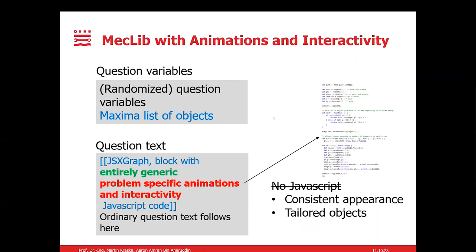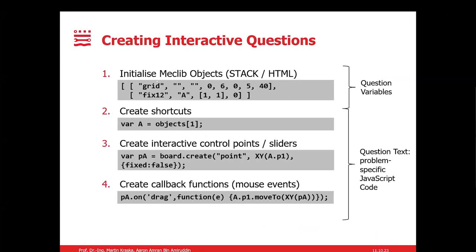Now, as stated earlier, to enable the question in Moodle to be interactive, the creator of the questions now needs to have some knowledge of JavaScript in order to combine the objects together and to ensure that the entire system moves uniformly. This is done in MecLib by, for example, if you want to create the interactive questions, we have to firstly initialize the objects, which in this case are the question variables. In Moodle we do it as a STACK variable, but then in JSFiddle we just put it in the HTML section.